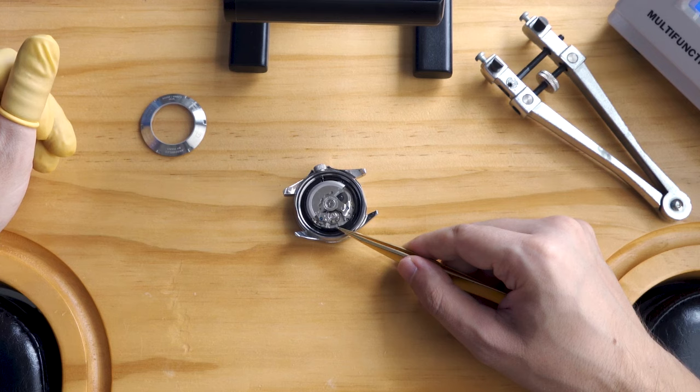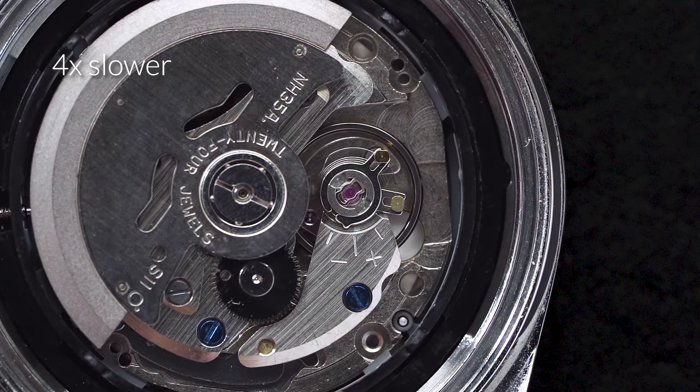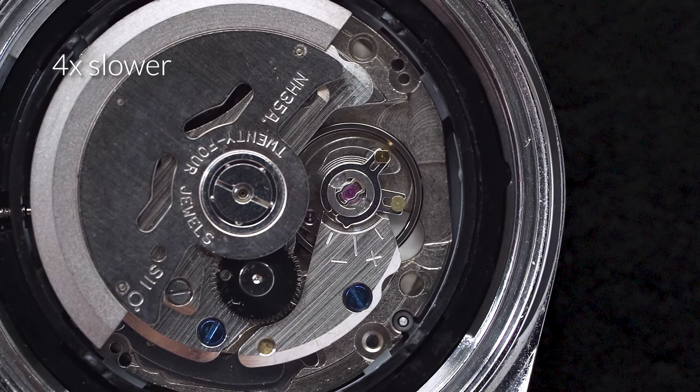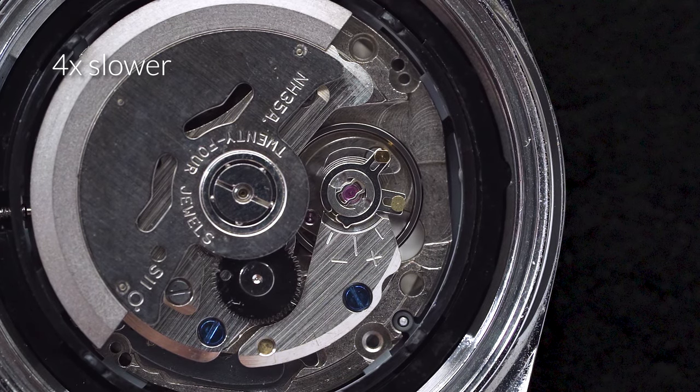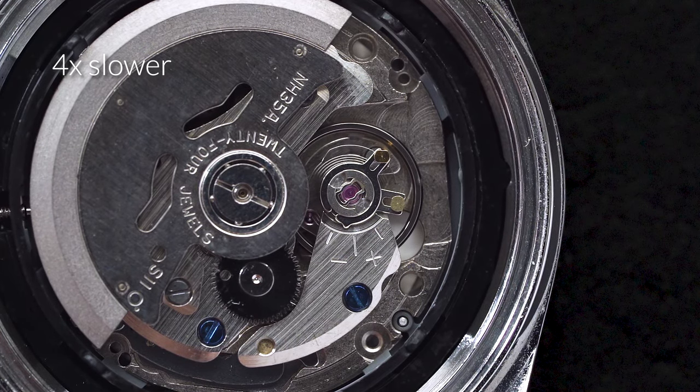If there isn't a mark on the balance bridge, it's useful to understand what a regulator actually does. It controls how much of the hairspring can swing freely. A longer hairspring takes longer to complete a swing and so the watch runs slower.